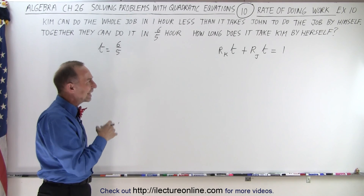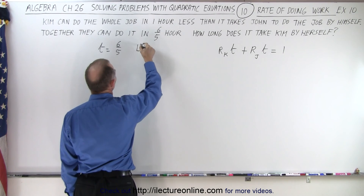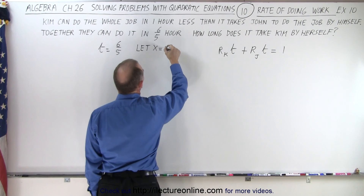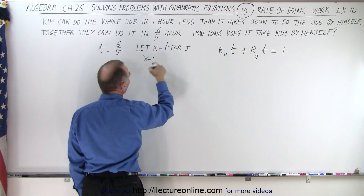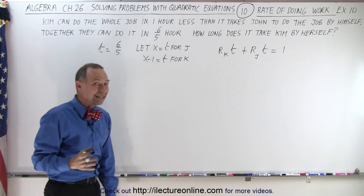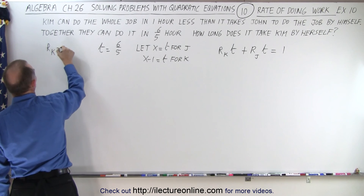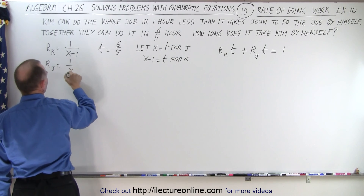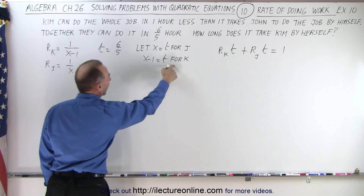Now for the rate of Kim and the rate of John — how do we get that? We're going to let x equal the time for John by himself. That means x minus one, because it's one hour less, is equal to the time for Kim. We know that the rate is the inverse of the time, so the rate of Kim is one over x minus one, and the rate for John is one over x.